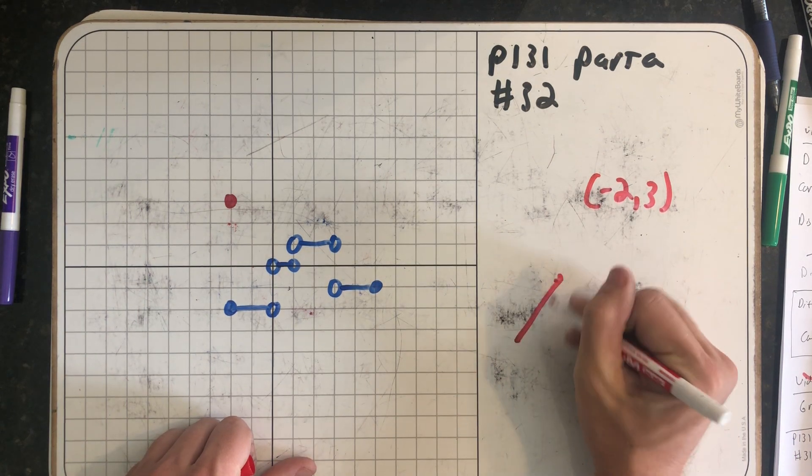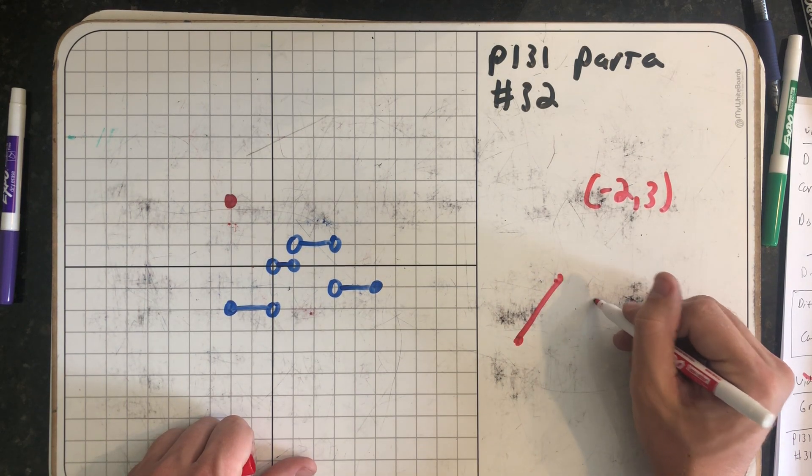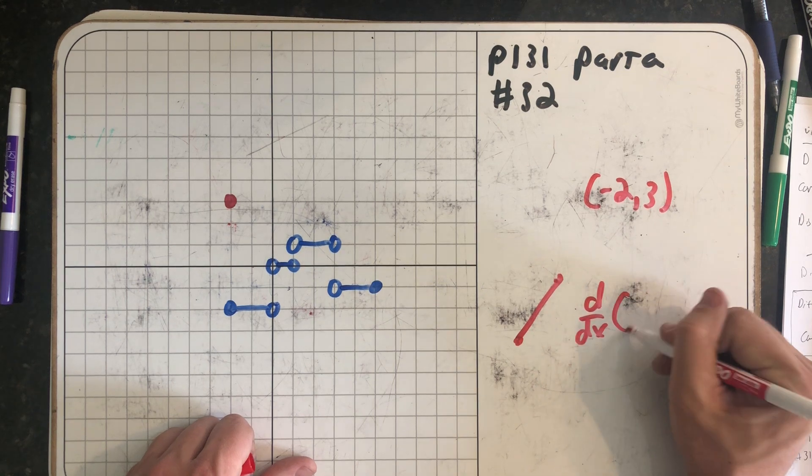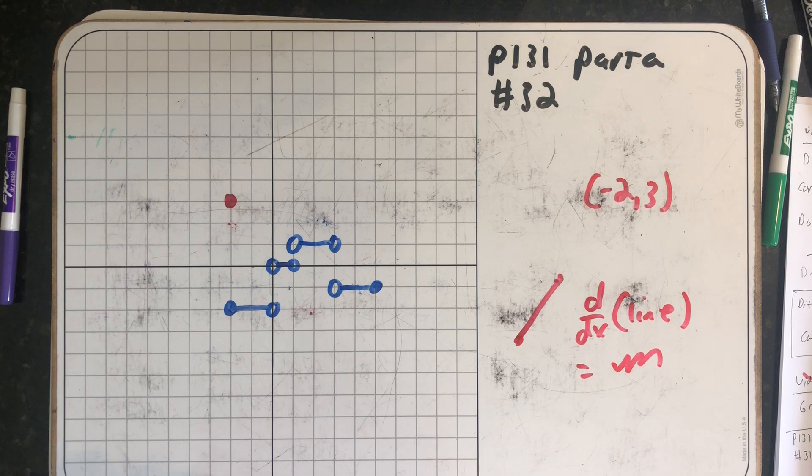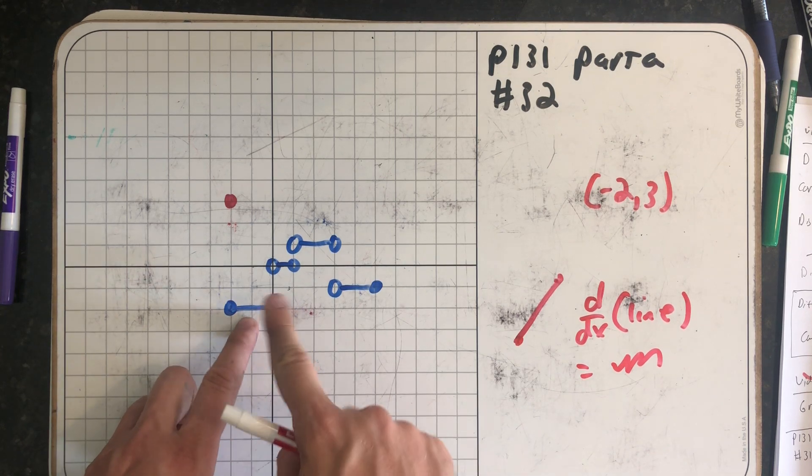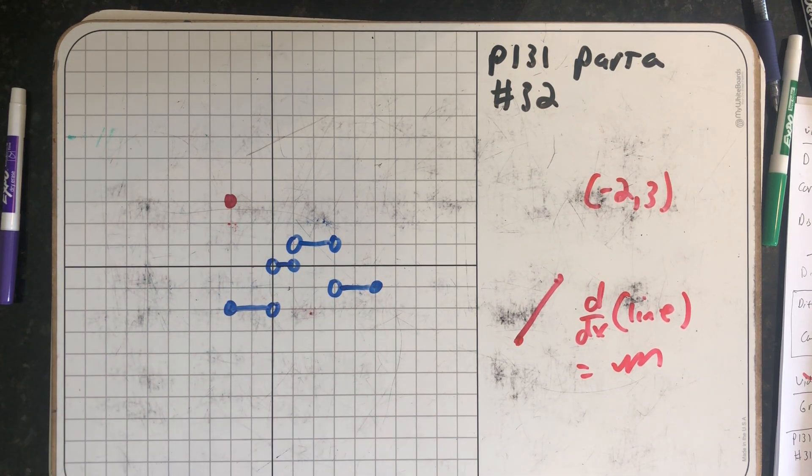If I draw a line segment, its derivative—the derivative of a line segment is its slope. So the y-values where these horizontal lines are, those are the slopes of the line segments I'm supposed to be drawing.